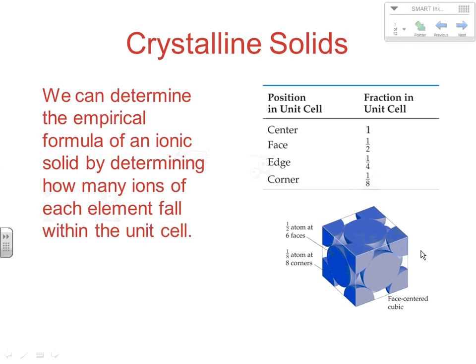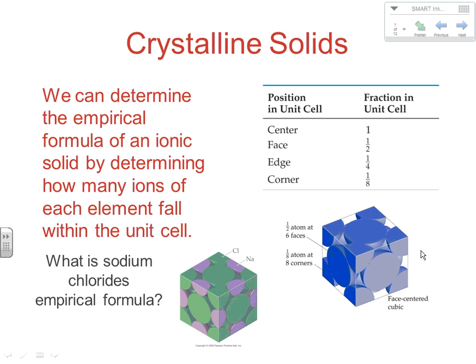We can take this further and use it to do something real. We can determine the empirical formula of an ionic solid by looking at how many ions of each element fall within the unit cell. So if we take a look at sodium chloride, the chloride and the sodium are both in a face-centered arrangement.